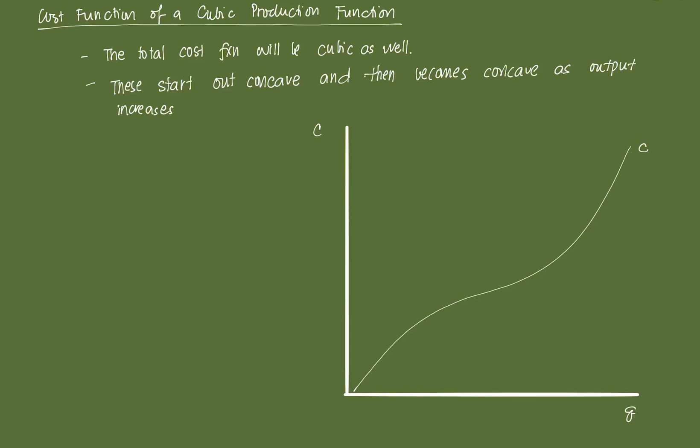And what you'll notice in the graph here is that the cost curve starts out concave, so from this portion here until somewhere here, the graph is still concave. Then as output increases, it eventually becomes convex from that point here until in perpetuity.